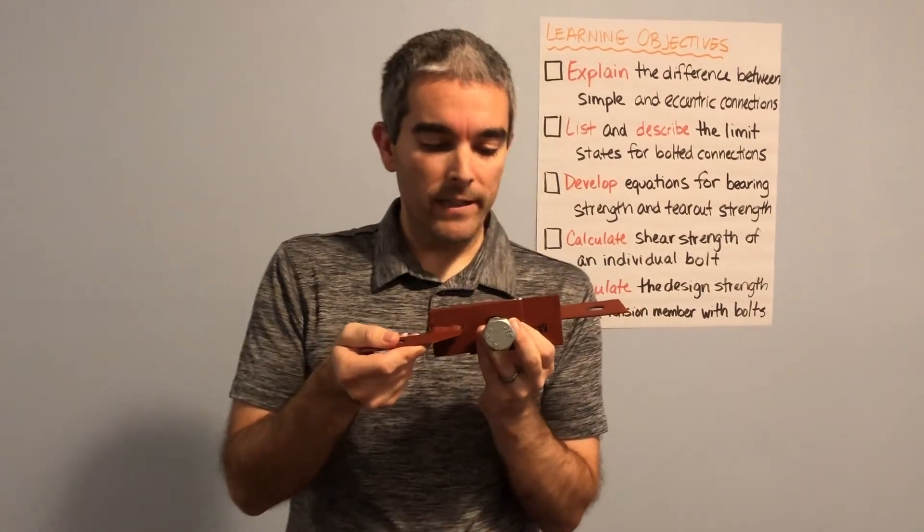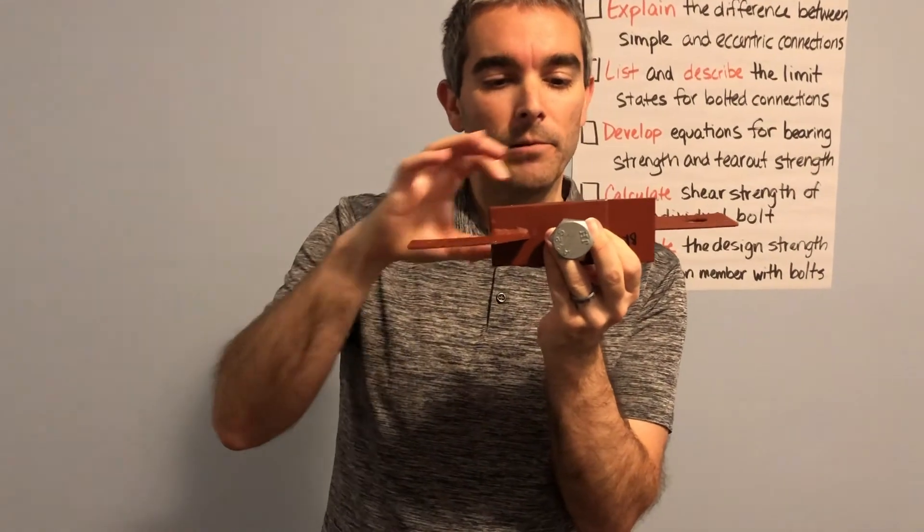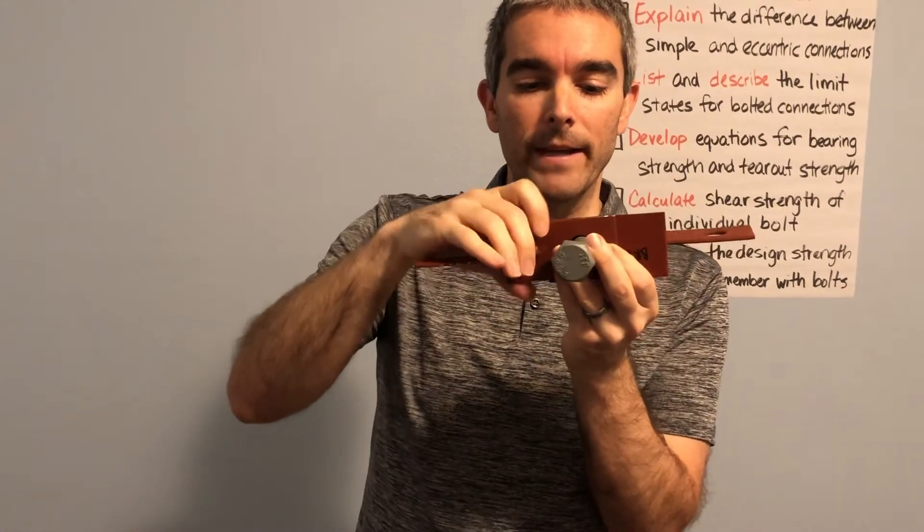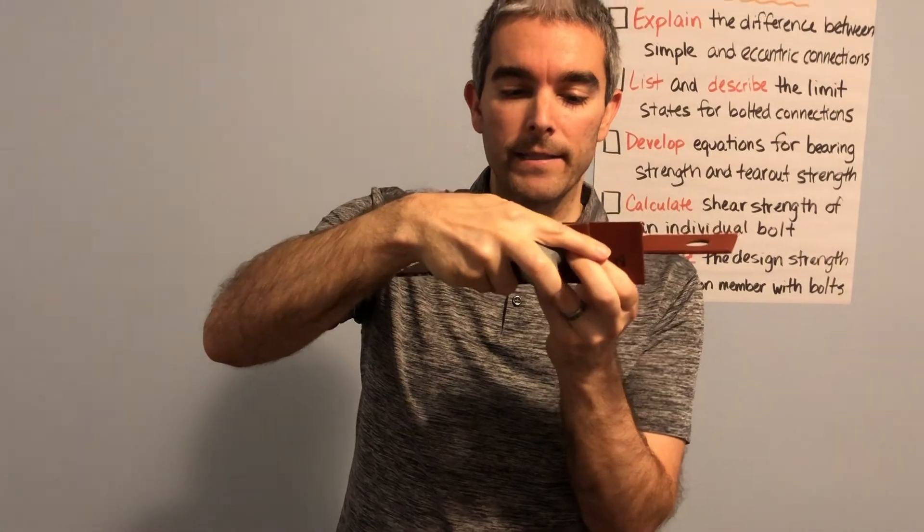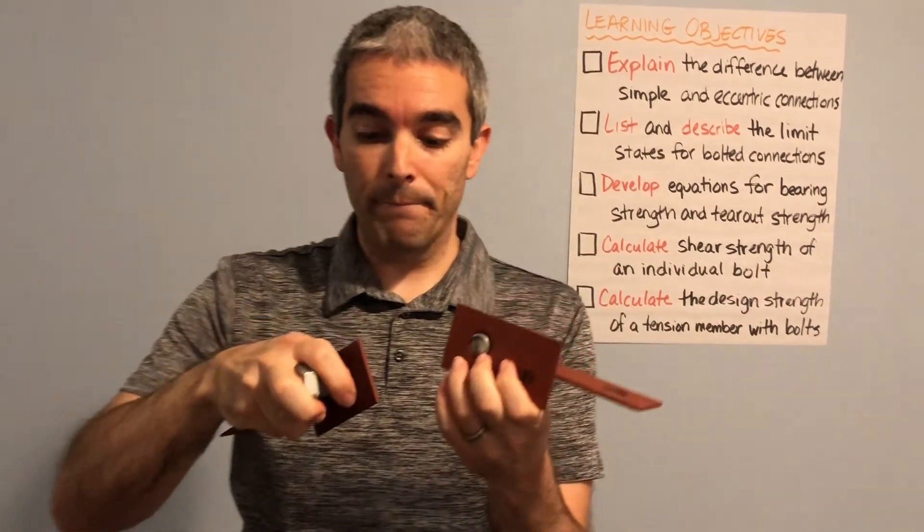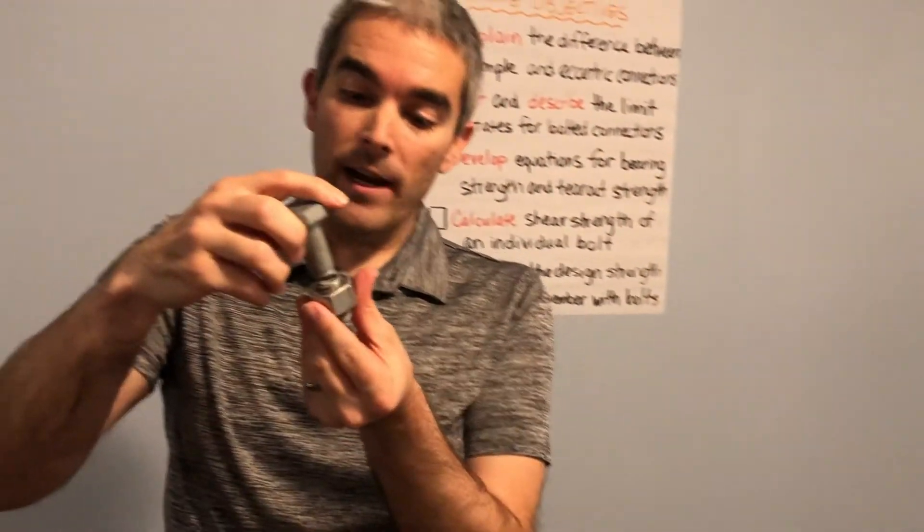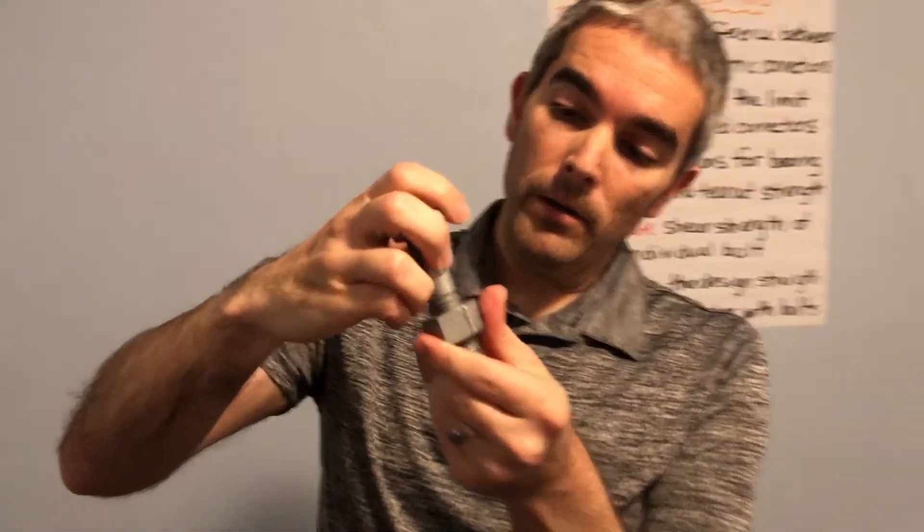Now we have to look at bolt shear. In bolt shear we have this tension connection where we're pulling both sides and we're expecting that these plates are stronger than the bolt and the bolt is going to rip apart. So when we look at the strength of bolt shear, we're looking at the strength of the bolt as it is being ripped apart here.